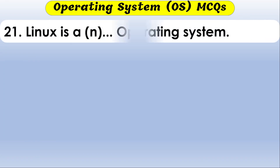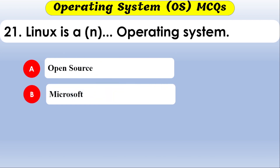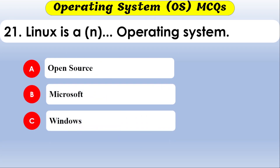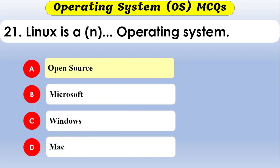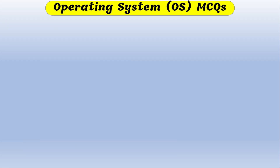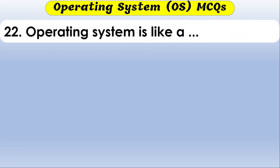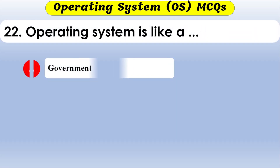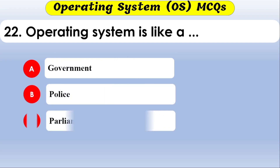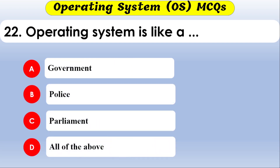Linux is what type of operating system? The options are open source, Microsoft, Windows, and Mac. The correct option is open source — Linux is an open-source operating system.